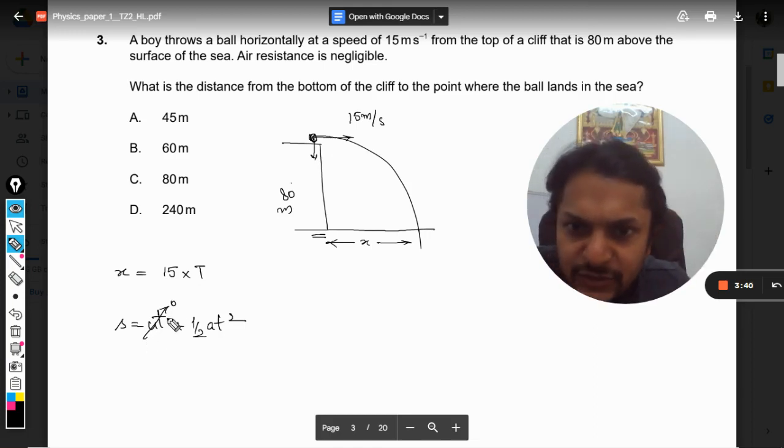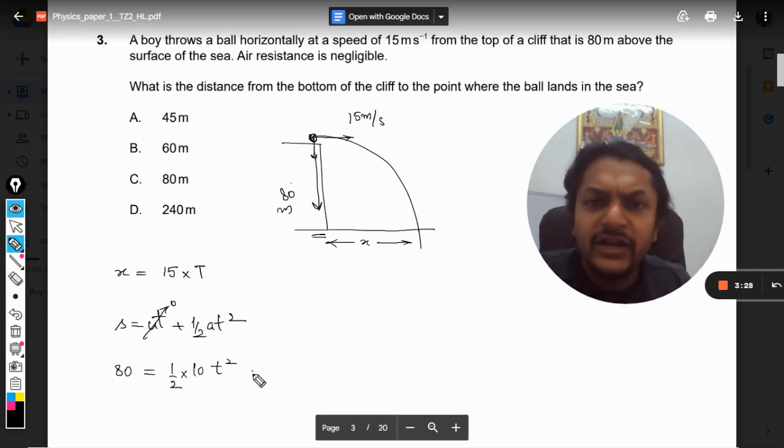The distance to be traveled is 80 in the downward direction, so 80 = 1/2 × acceleration. Acceleration is basically gravity; we are taking it as 10. So 80 = 1/2 × 10 × t², from where we will find the value of t.